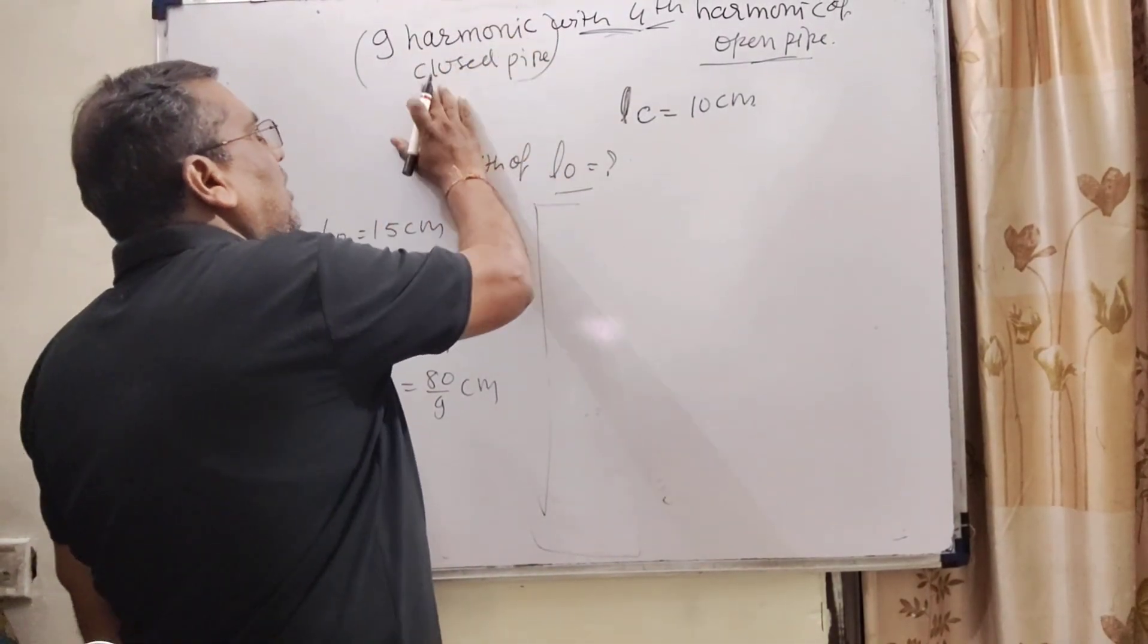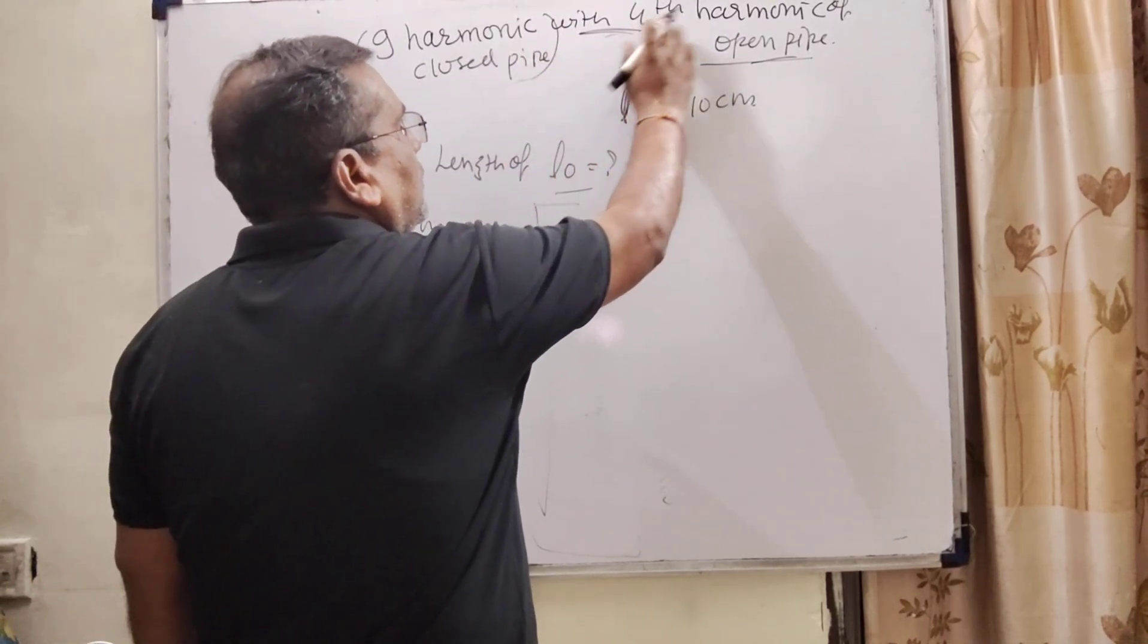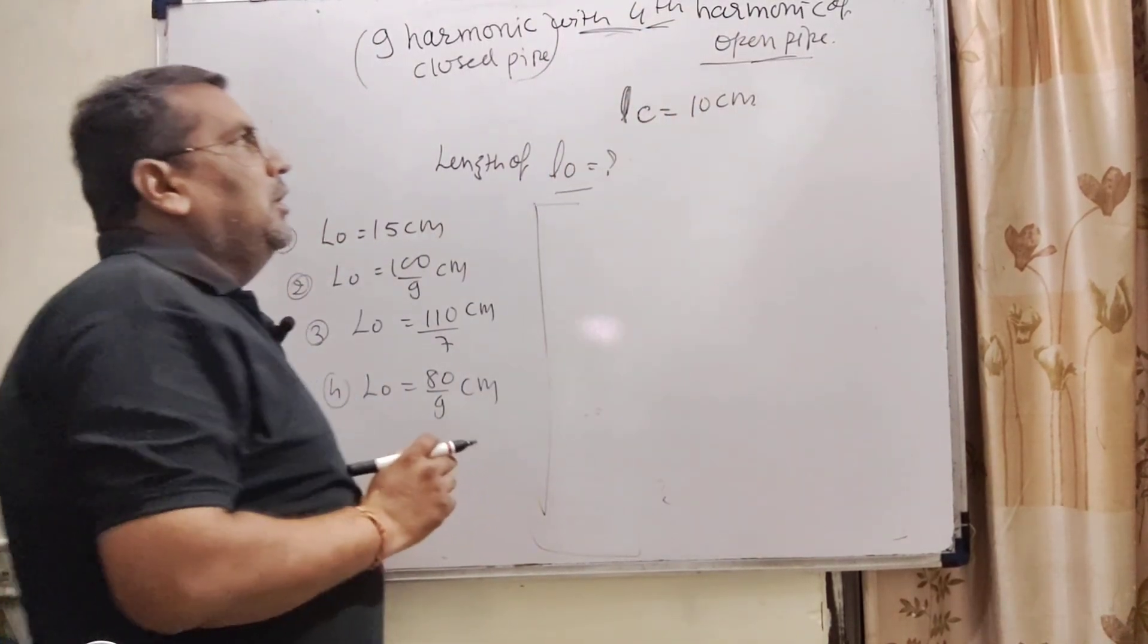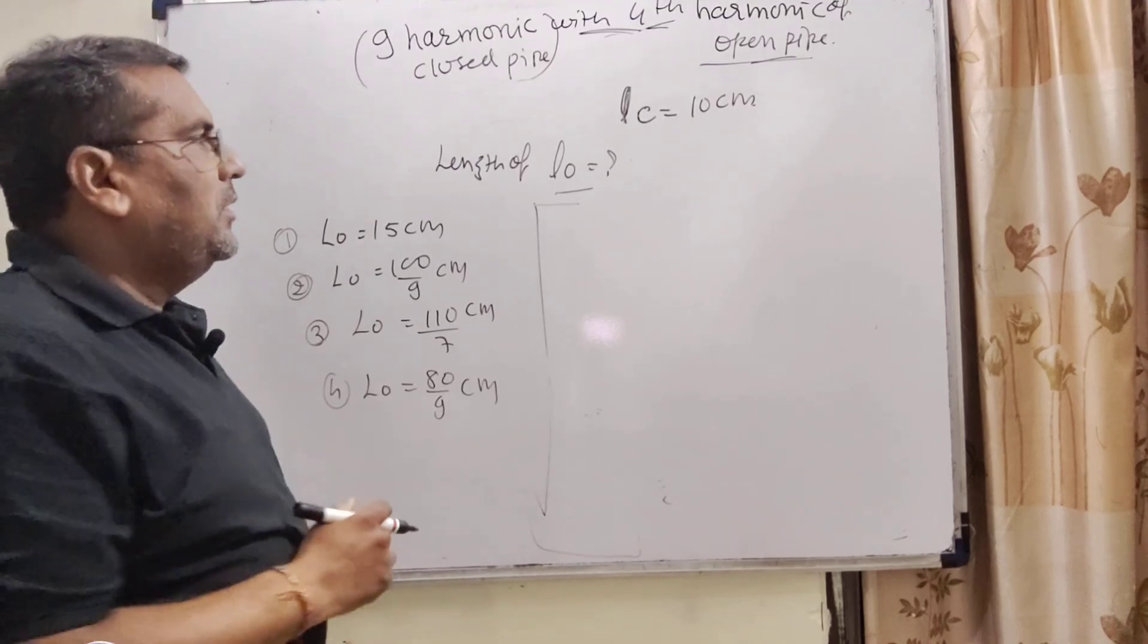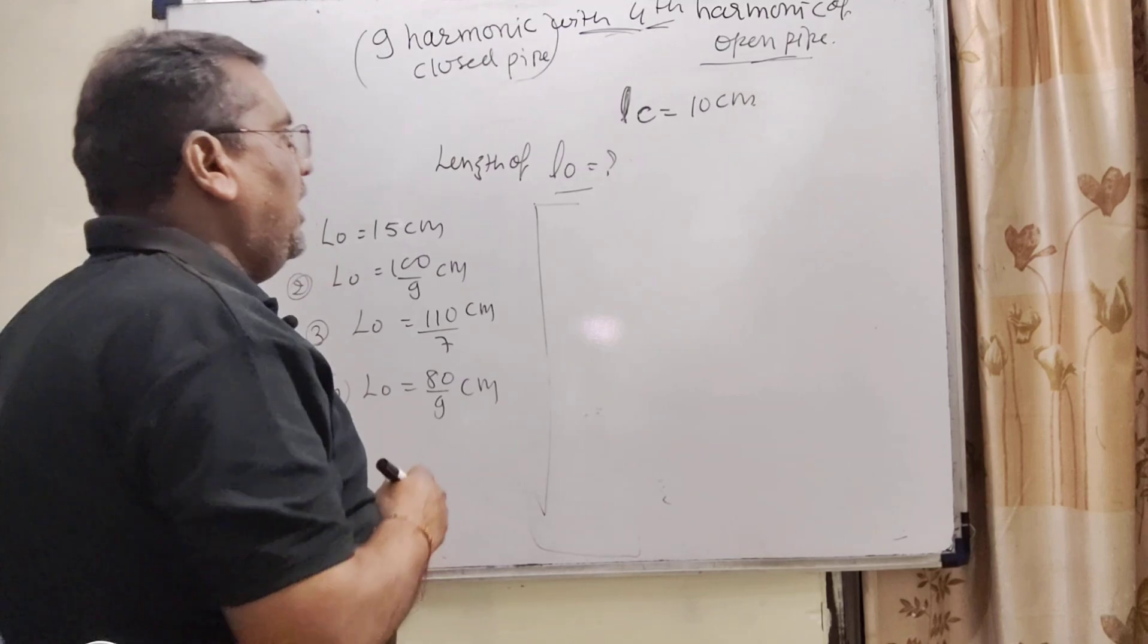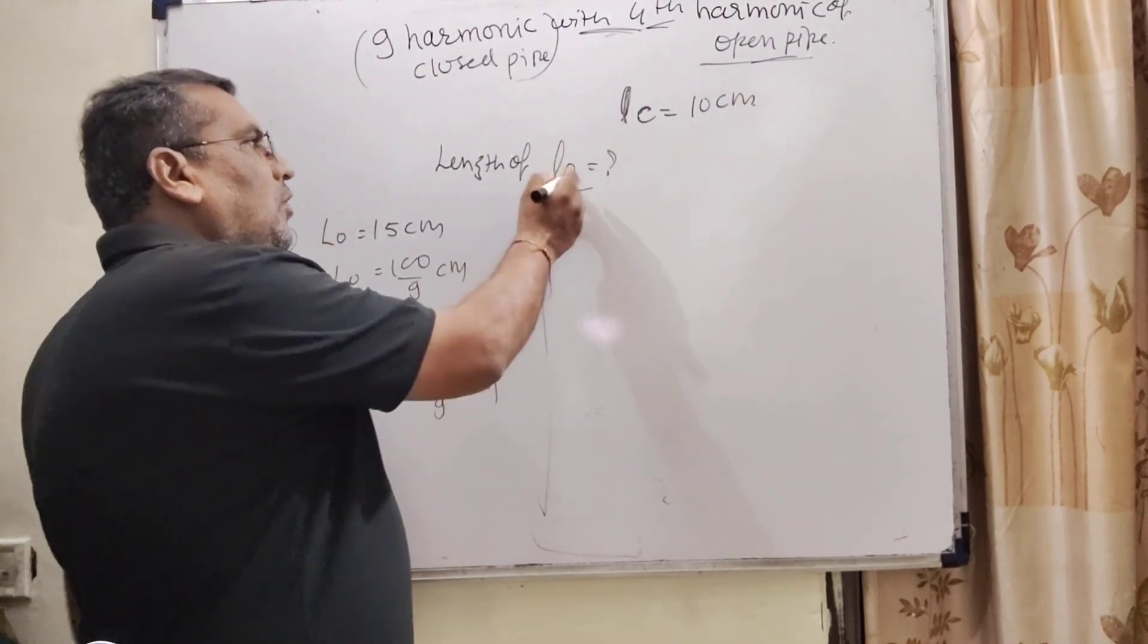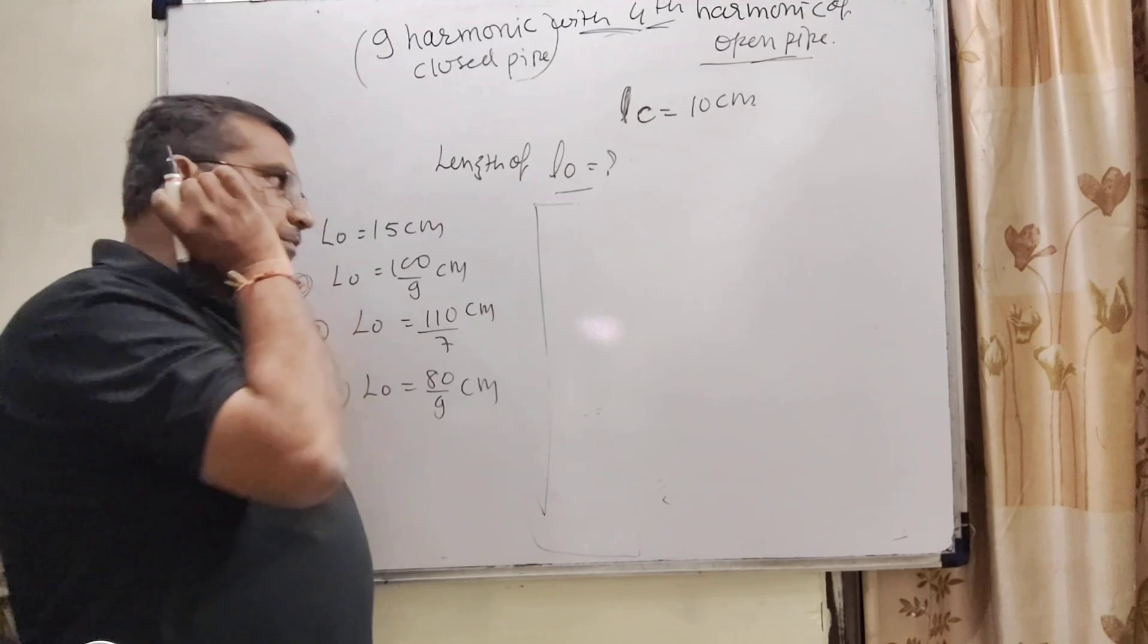Now what is the question? Here we have given ninth harmonic of closed pipe resonates with fourth harmonic of open organ pipe. And here length of closed organ pipe is given 10 cm. And here we have to calculate the length of L0, means length of open organ pipe.